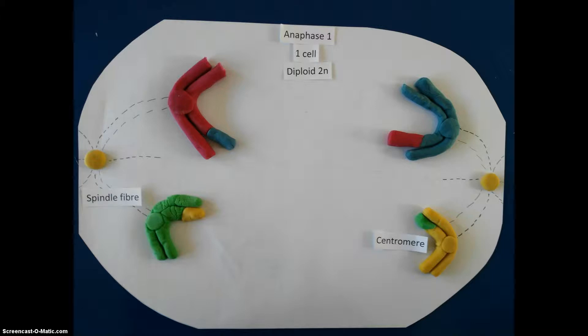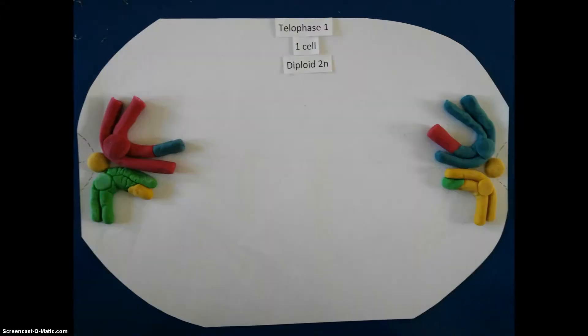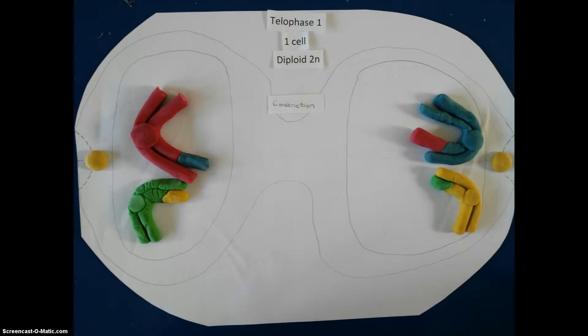In telophase 1, the chromosomes have now reached the poles of the cell and so each pole has half the number of chromosomes present in the original cell. The cell membrane constricts and divides the cytoplasm in half to form two new cells.